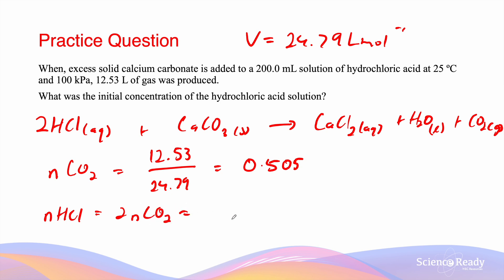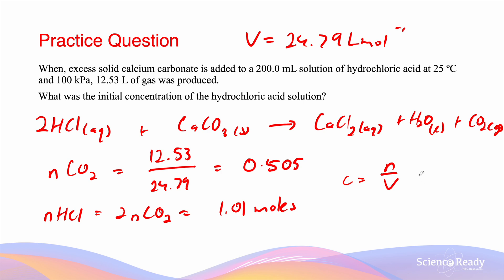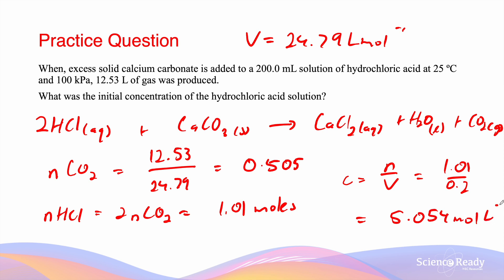The moles of HCl therefore equal 1.01 moles. We want to find the initial concentration. We know the volume is 200 mL = 0.2 liters. Using C = n/V: C = 1.01 / 0.2 = 5.054 mol/L. Our answer is given in four significant figures, as that is the smallest number of significant figures used in our calculation.